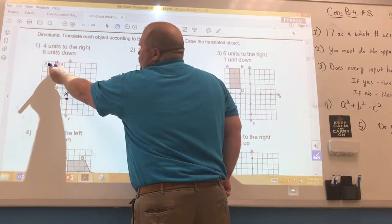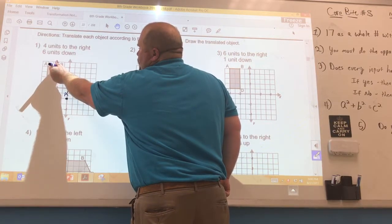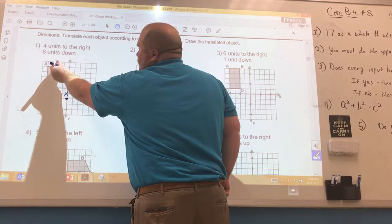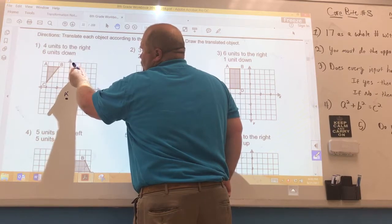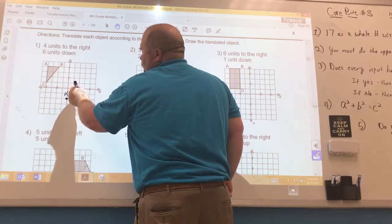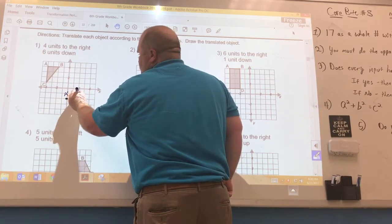B, and remember, where you start is zero. You don't go to one until you get to the next line. So B, I'm going to go four units to the right, one, two, three, four, six units down, one, two, three, four, five, six. And that will be B prime.